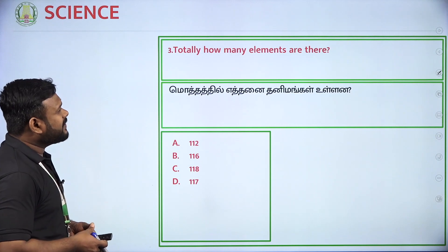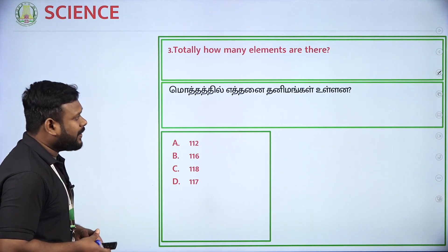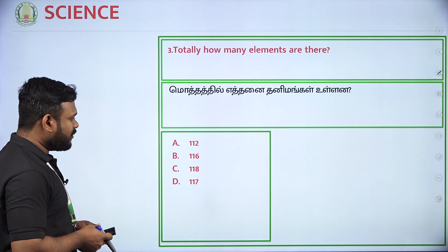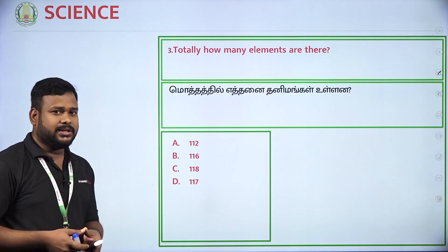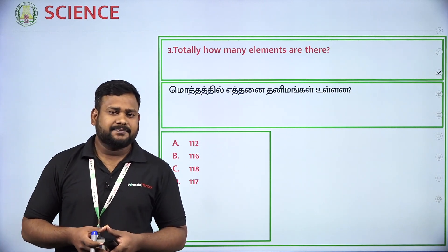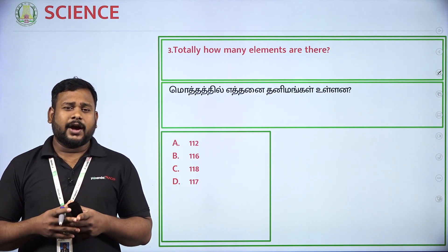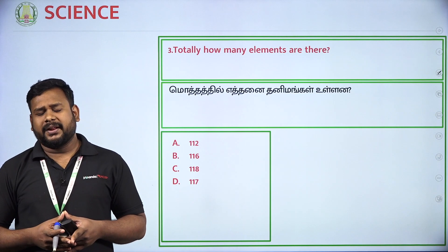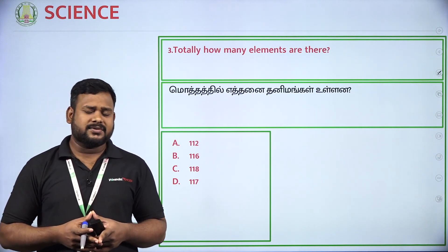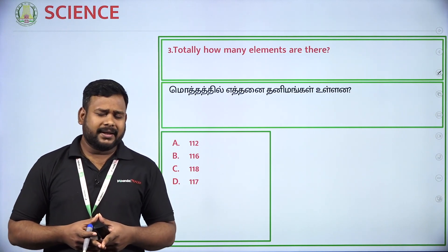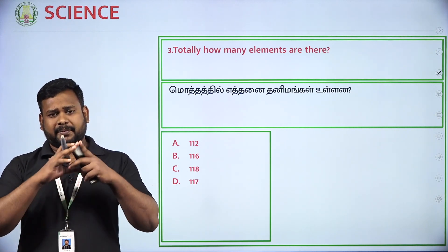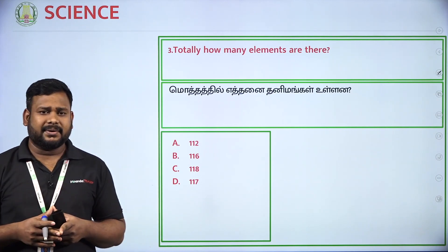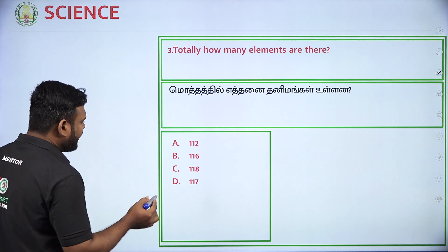Totally, how many elements are there? If we ask the options — IUPAC is the International Union for Pure and Applied Chemistry. They maintain the periodic table. That is 118 elements.